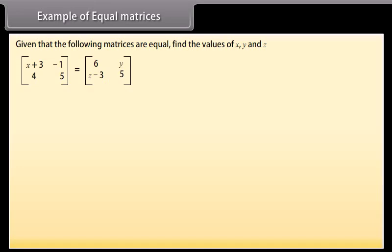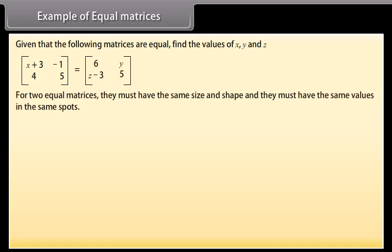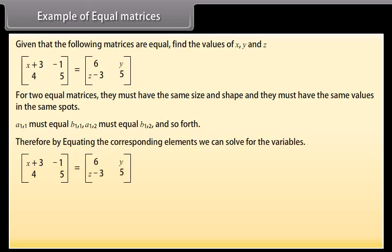Example of equal matrices: given that the following matrices are equal, find the values of x, y, and z. For two equal matrices, they must have the same size and shape and the same values in the same positions — that is, a₁₁ must equal b₁₁, a₁₂ must equal b₁₂, and so forth. By equating corresponding elements: x plus 3 equals 6, so x equals 3; y equals minus 1; z minus 3 equals 4, so z equals 7.